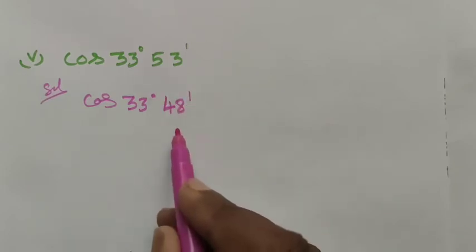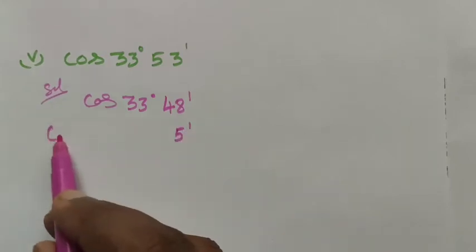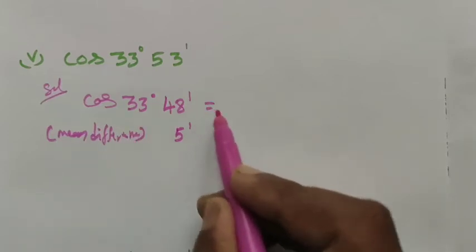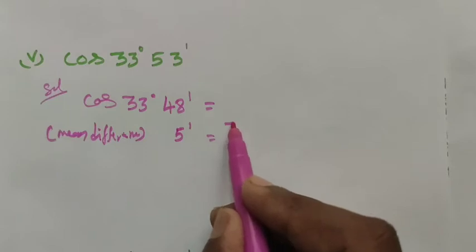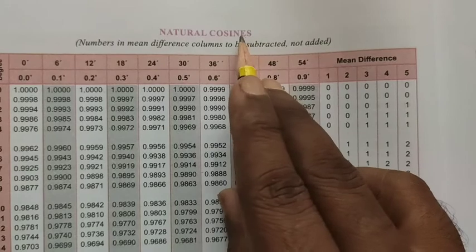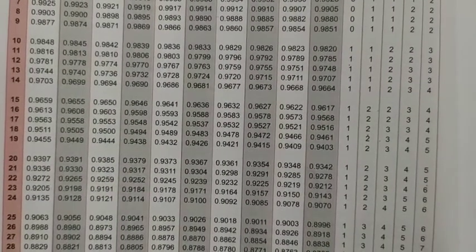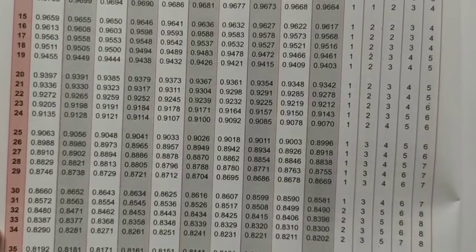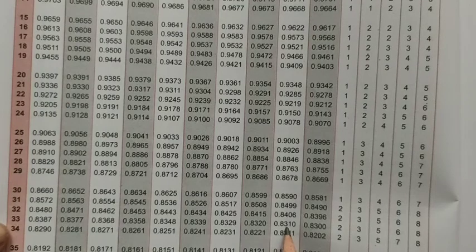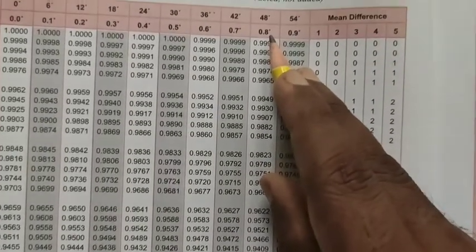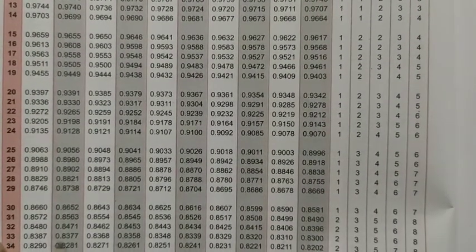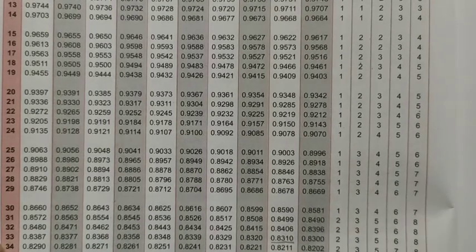We can find the difference 5 is less, so that is the mean difference. Let's subtract the mean difference. Cos is cosine, so the cosine table is 33 degree. So 33 degree and 48 minutes, the value is 0.8310.